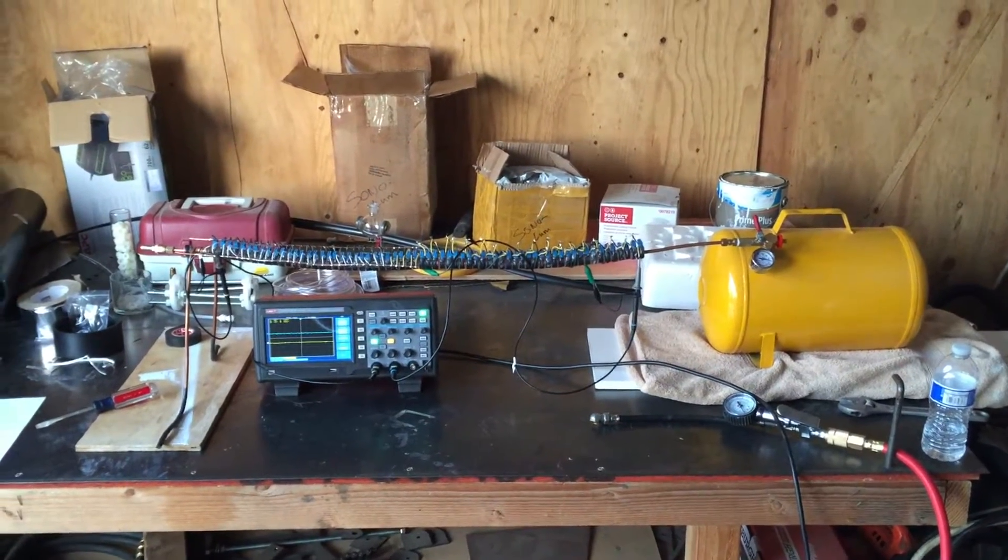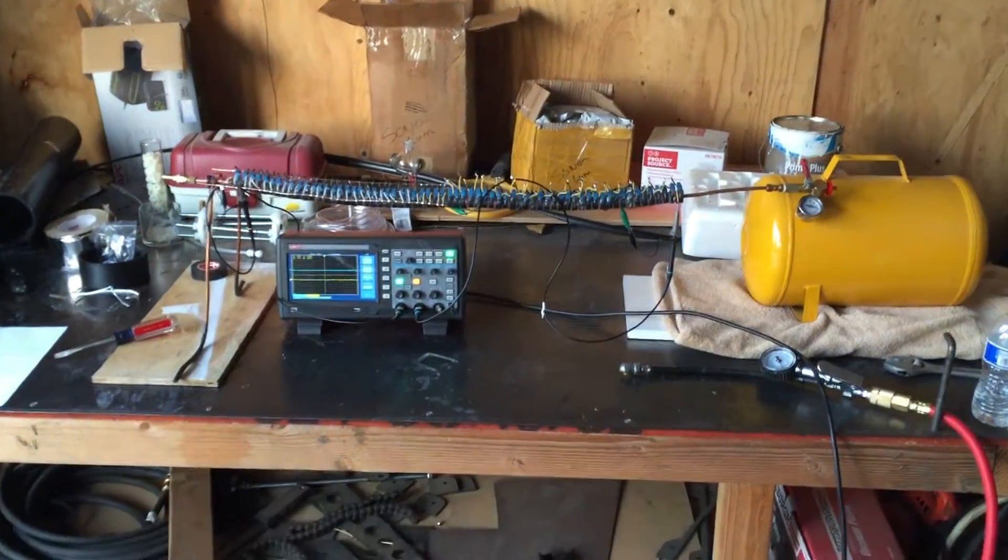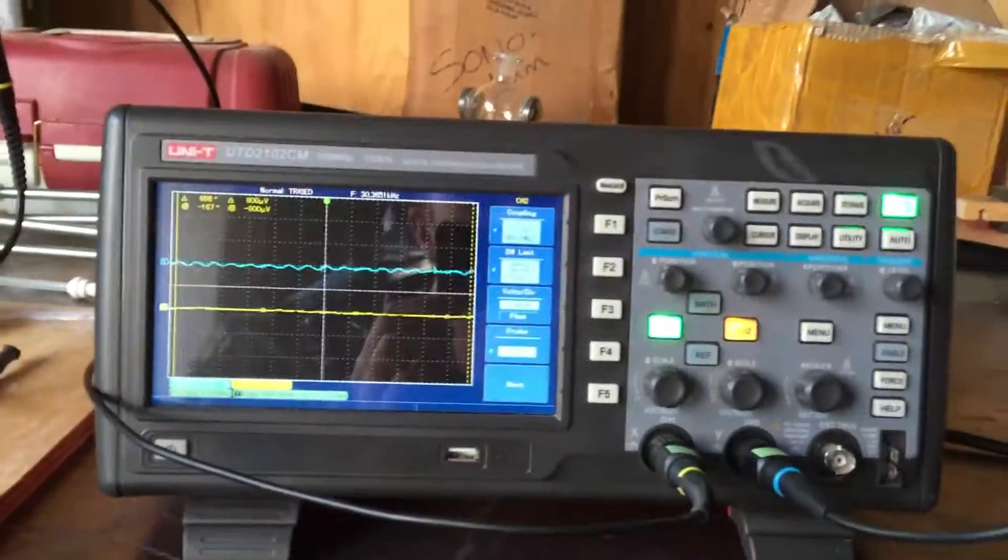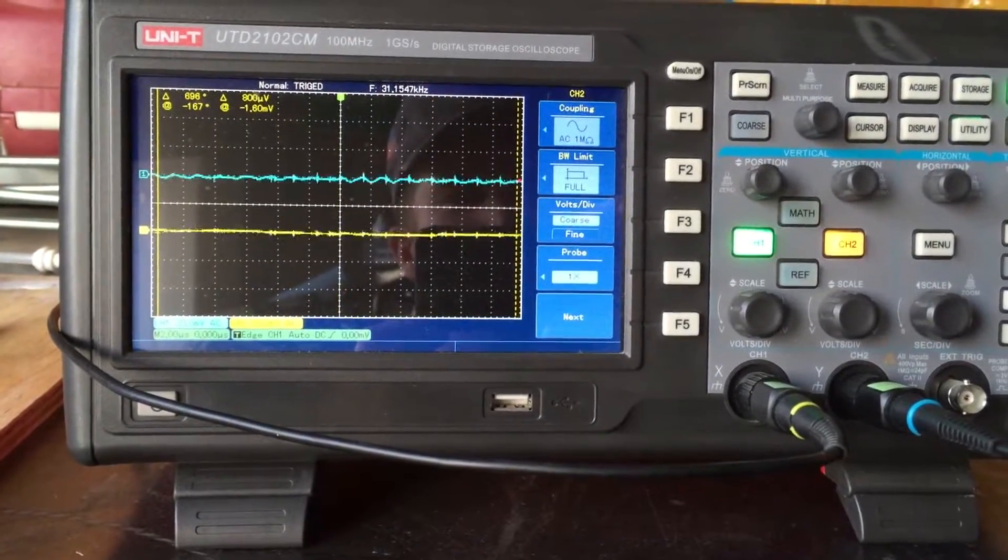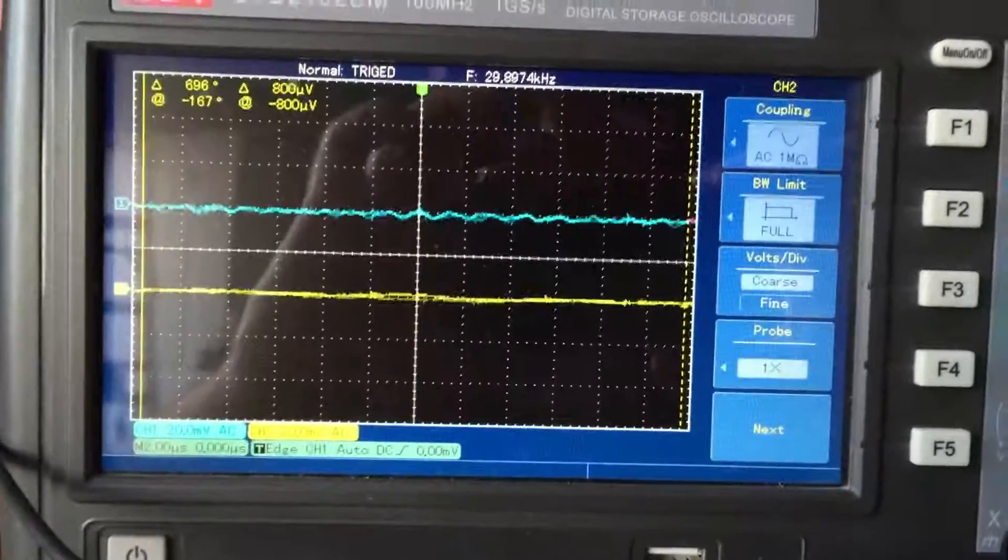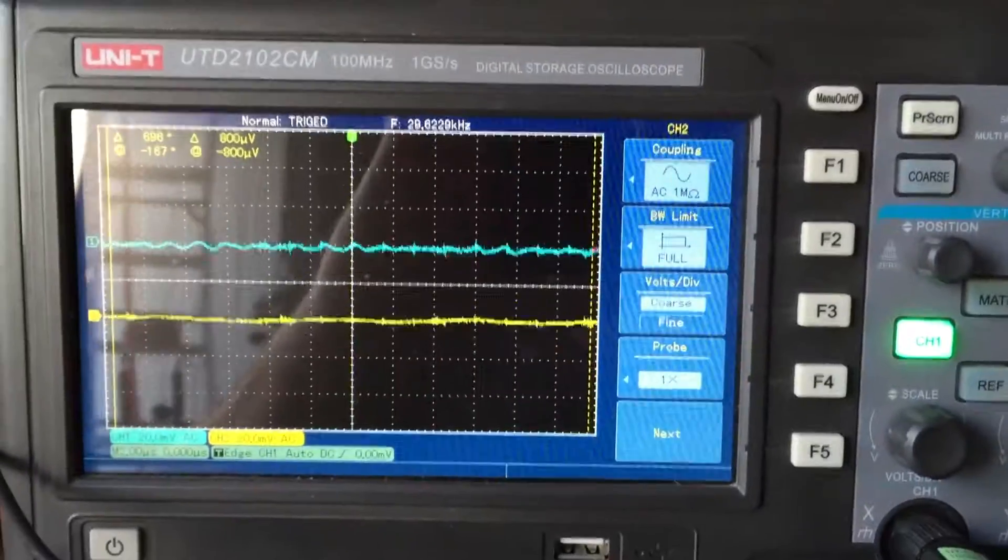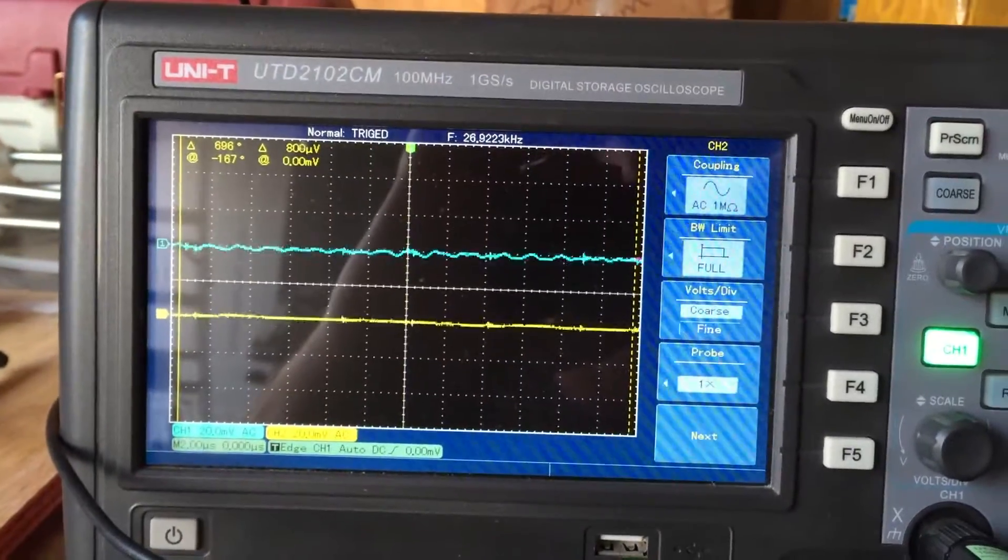All right, welcome back. We're going to do the hydrogen and oxygen test. So this is H2 and O2, not HHO. Let's look at the scope. We've got 20 psi. There is two thirds hydrogen and one third oxygen on board.